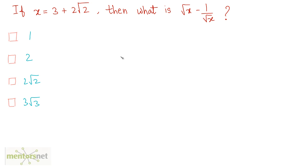Let us now solve the final question. If the value of x is given, what is the value of root x minus 1 by root x? We have been given the value of x, but taking the root of x doesn't help much because we cannot easily evaluate the root of 3 plus 2 root 2. So we have to find a way to remove the root x and reduce it to simple x.